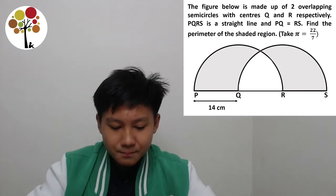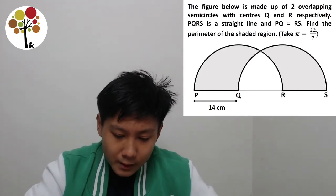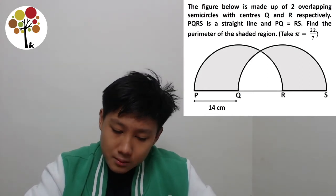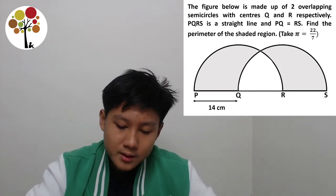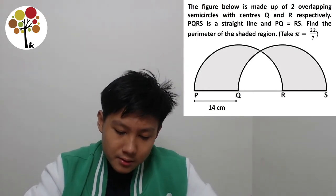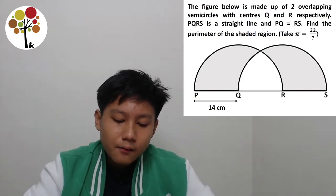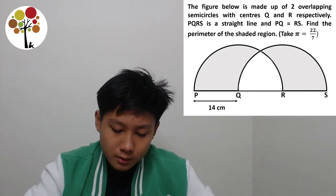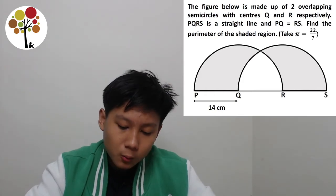This is now the second question. The figure below is made up of two overlapping semicircles with centers Q and R respectively. PQRS is a straight line and PQ is equal to RS. Find the perimeter of the shaded region, and take π as 22 over 7.